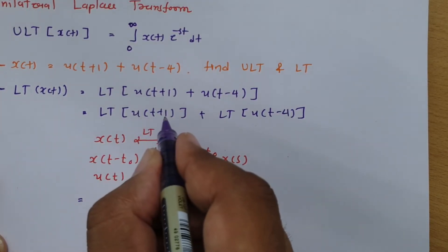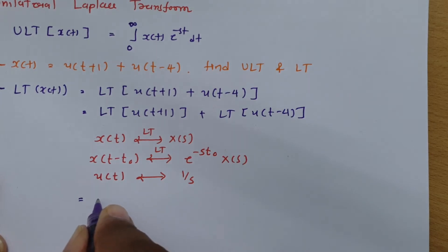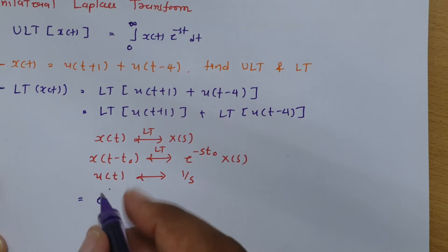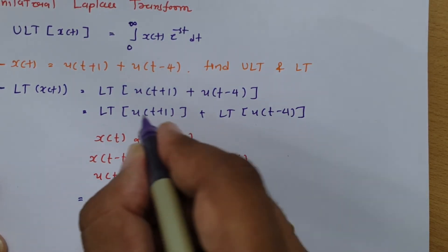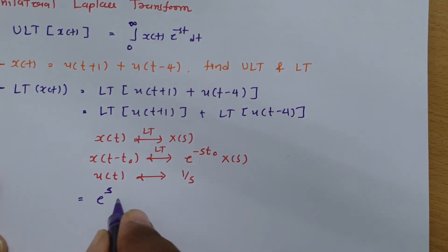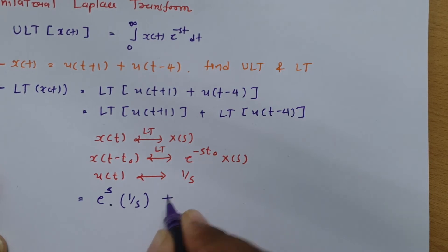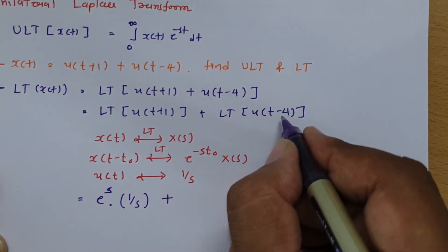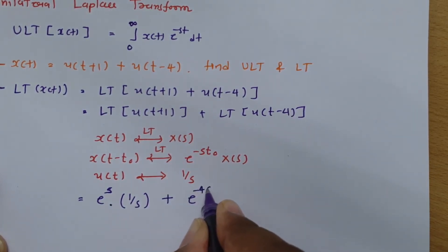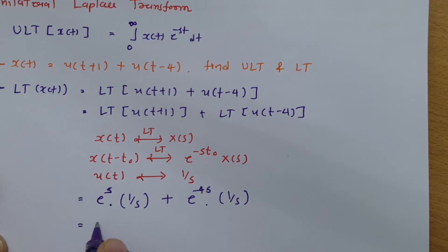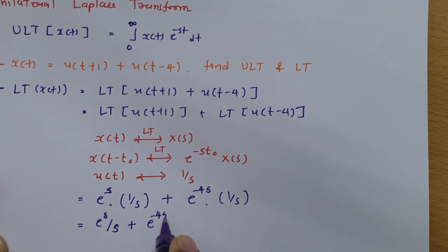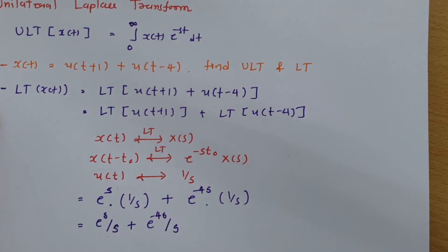For u(t+1), the shift is +1, so the Laplace transform is e^(s·1) · (1/s). For u(t-4), the shift is -4, so the Laplace transform is e^(-4s) · (1/s). Therefore, the resultant Laplace transform is e^s/s + e^(-4s)/s.